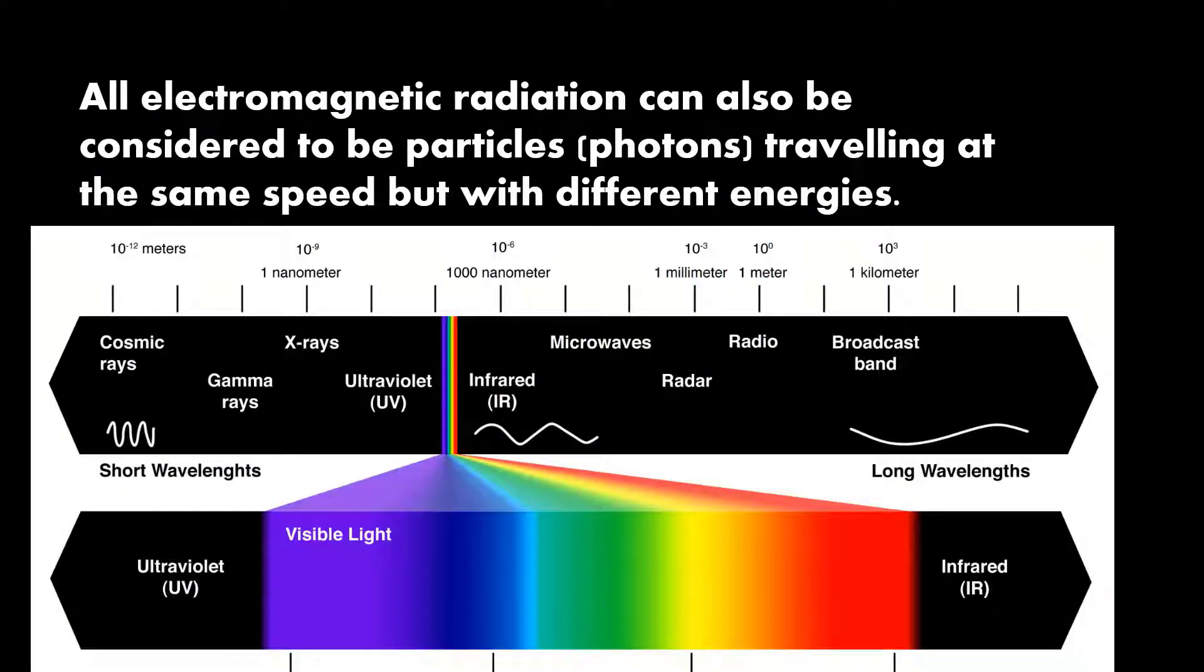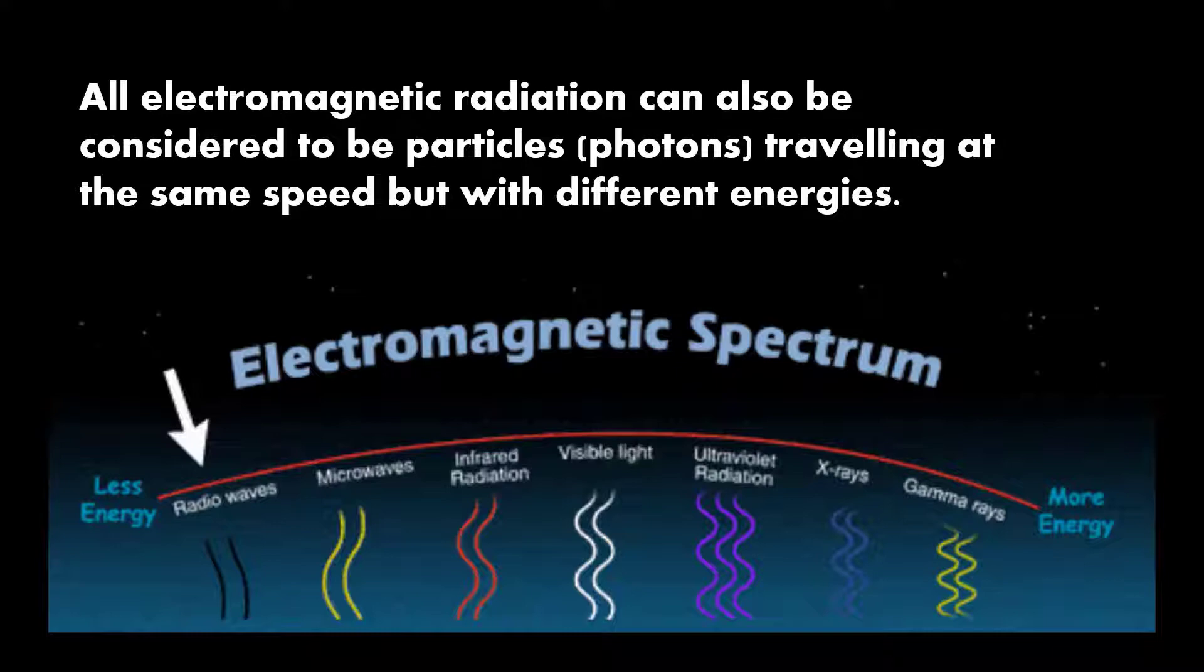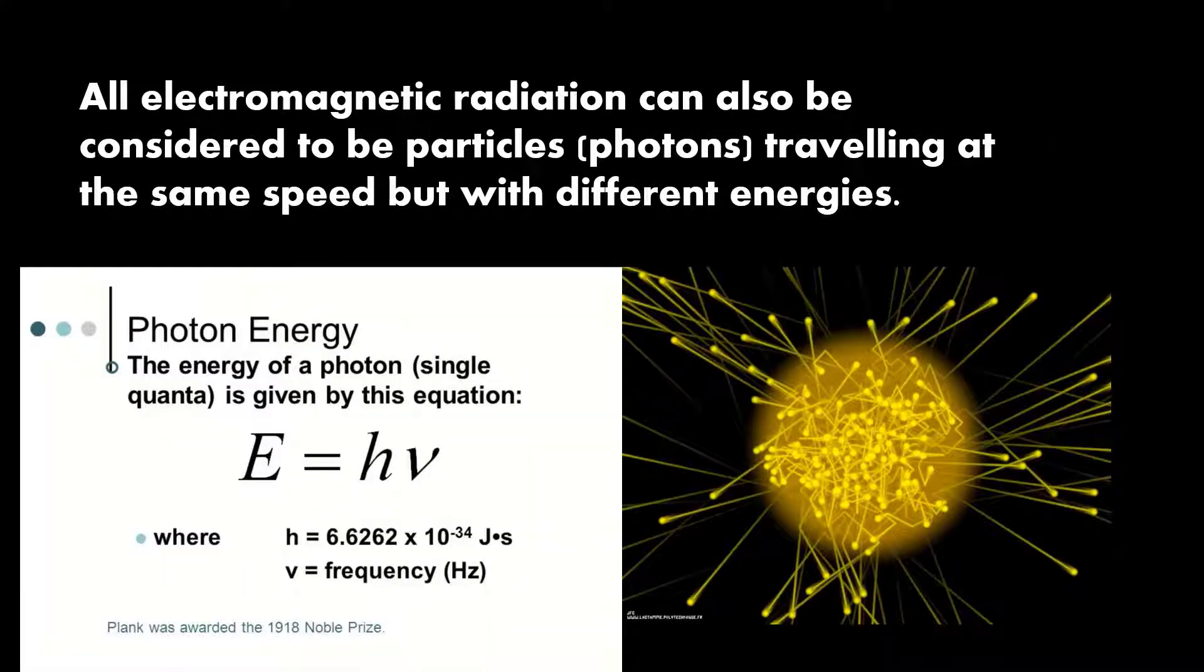All electromagnetic radiation can also be considered to be particles or photons traveling at the same speed but with different energies. Here we see the formula for Planck's constant, which describes this phenomenon.